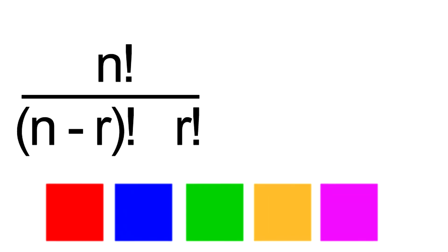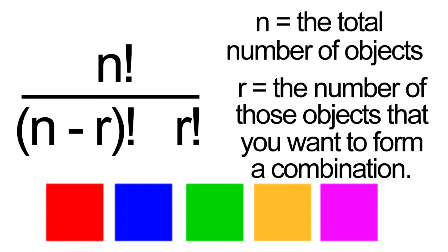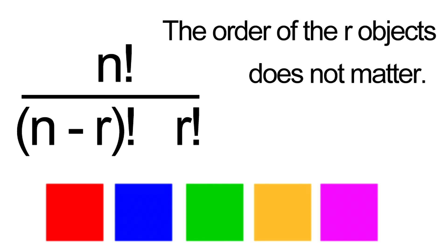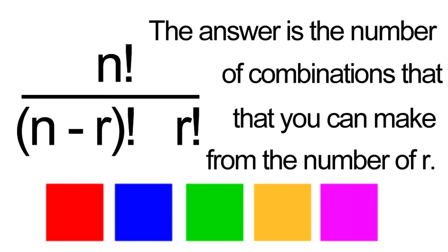Remember, the formula for combinations is n factorial divided by n minus r factorial times r factorial. Where n is the total number of objects and r is the number of those objects that you want to form a combination. The order of the r objects does not matter. The answer is the number of combinations that you can make from the number of r.